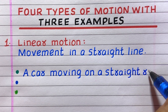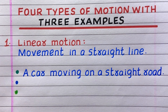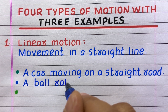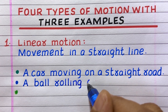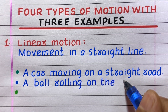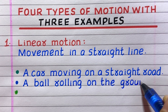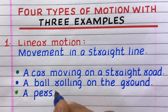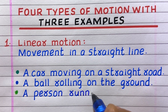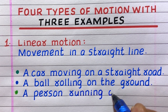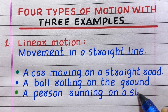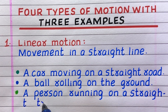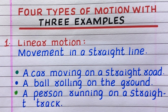Examples of linear motion: first, a car moving on a straight road; second, a ball rolling on the ground; third, a person running on a straight track.